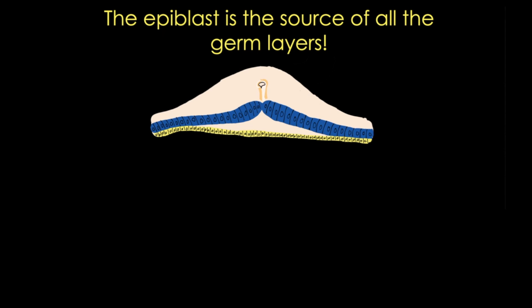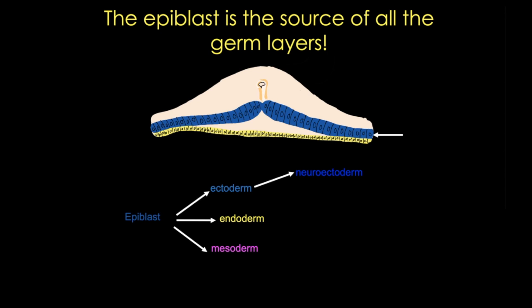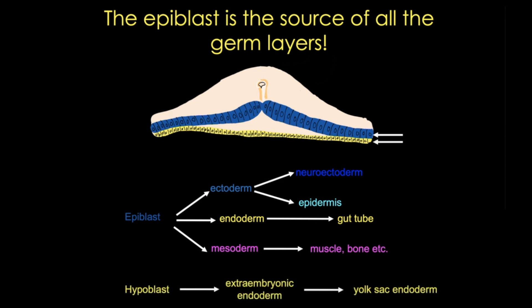Let's review what becomes of our bilaminar disc after gastrulation. The epiblast forms the ectoderm, the endoderm, and the mesoderm. The midline portion of the ectoderm will form the neuroectoderm — the nervous system — while the rest becomes epidermis. Endoderm forms the gut tube, digestive system, and lungs, while mesoderm will form muscle, bone, cartilage, kidneys, blood, and much more. The hypoblast will form the extraembryonic endoderm and eventually the yolk sac endoderm.